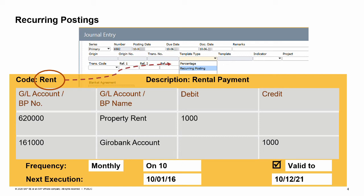The system duplicates the original recurring posting, instance 0, every time the execution date arrives and presents a report recommending you post the transactions that are due. Once you use this instance and add it to the system, it will be deleted. You can set the system to display all the recurring transactions available for processing on today's date when you log in. This setting is made in the general settings window under system initialization in the administration module. On the services tab, select the display recurring postings on execution checkbox.